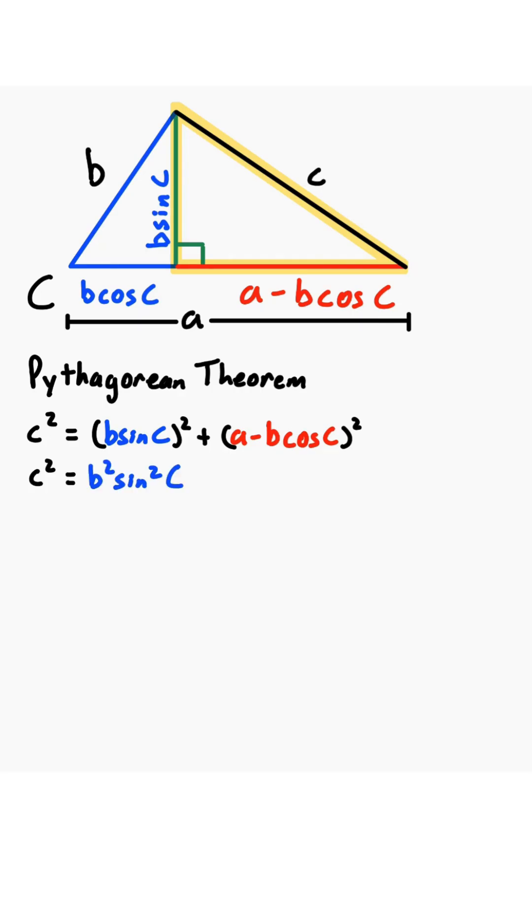B sine of C quantity squared is B squared times sine squared of C, whereas A minus B cosine of C quantity squared is A squared minus 2AB cosine of C plus B squared times cosine squared of C.